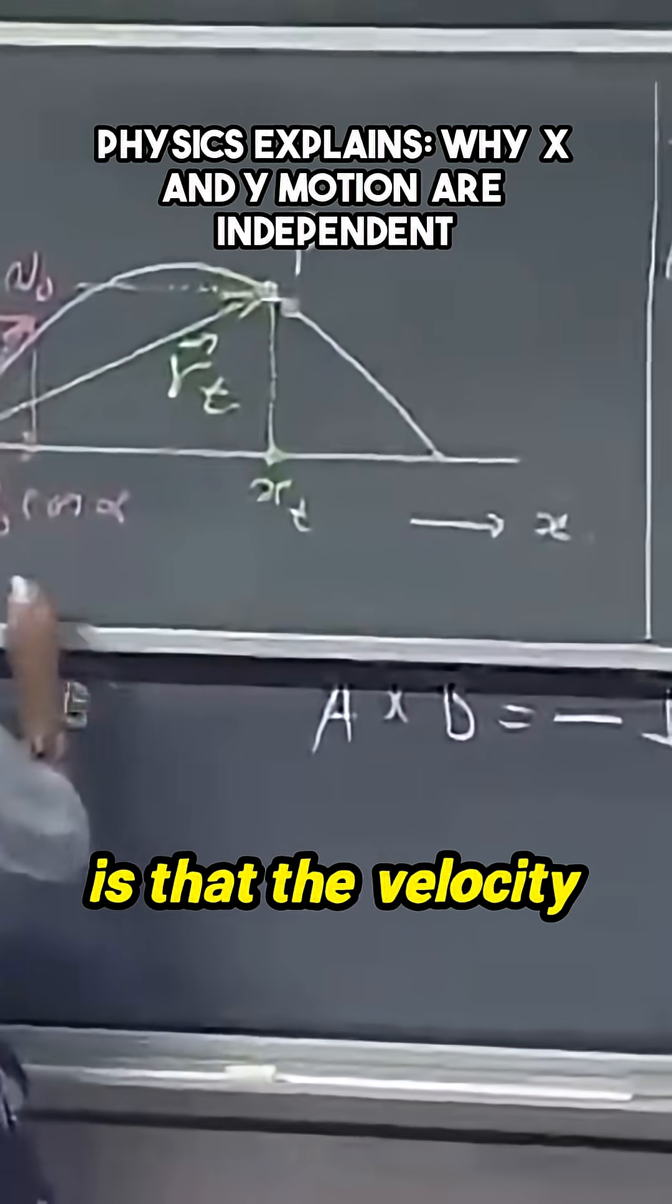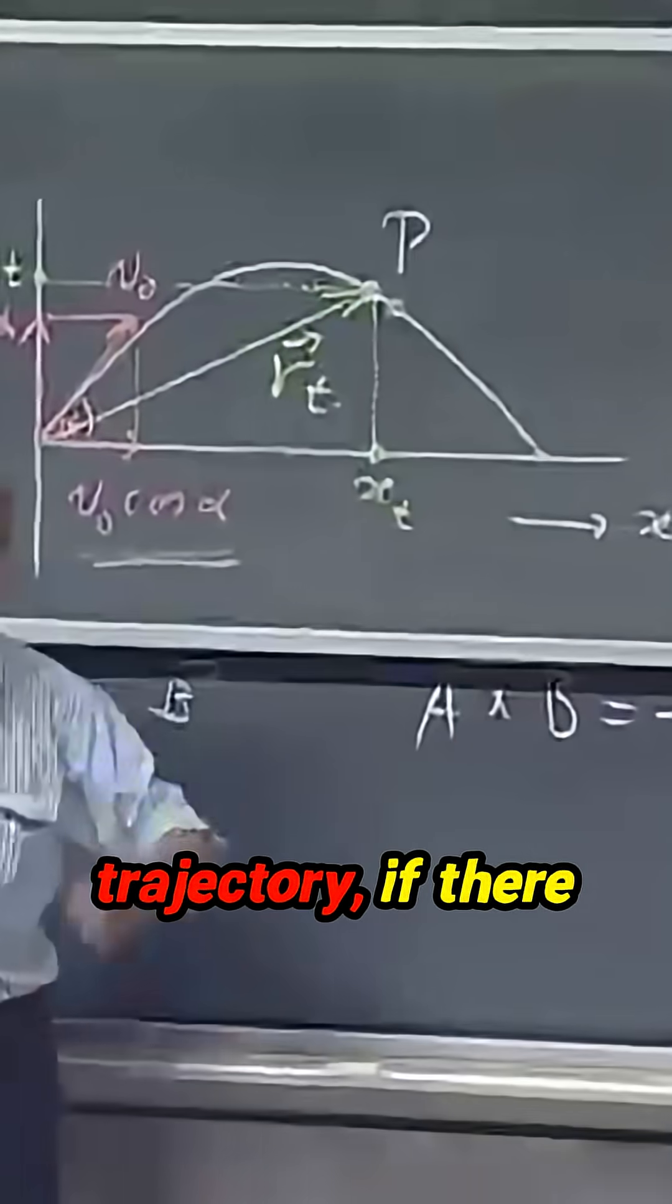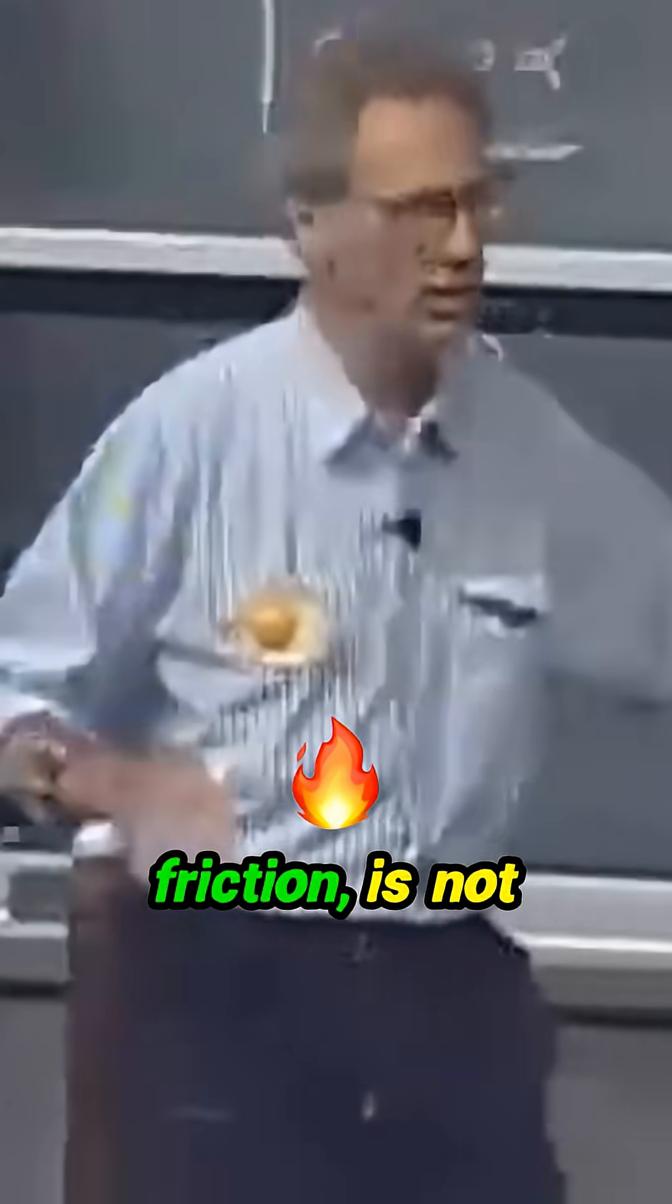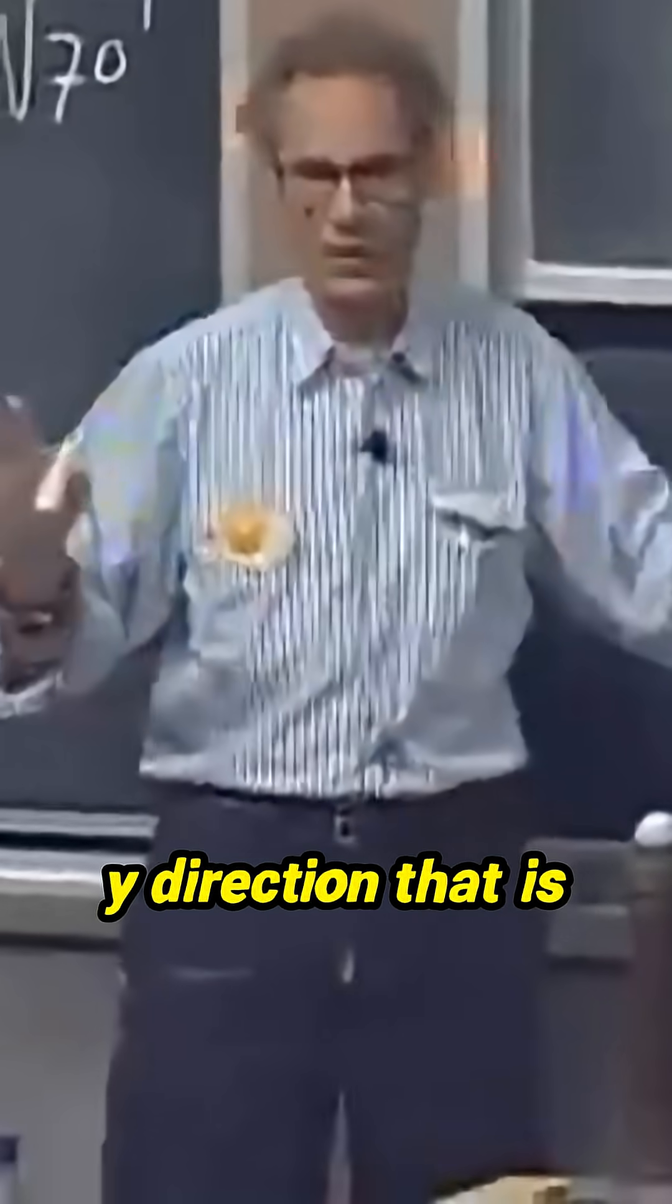And the remarkable thing is that the velocity in the x-direction throughout this whole trajectory, if there is no air drag, if there is no friction, is not changing. It's only the velocity in the y-direction that is changing.